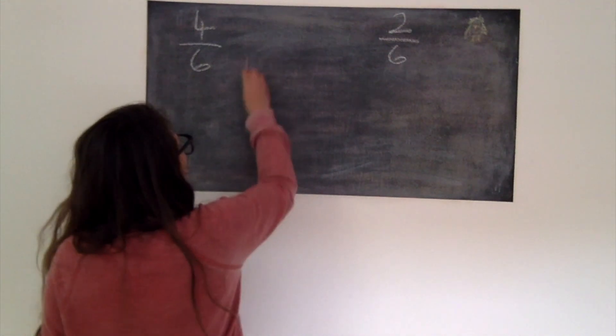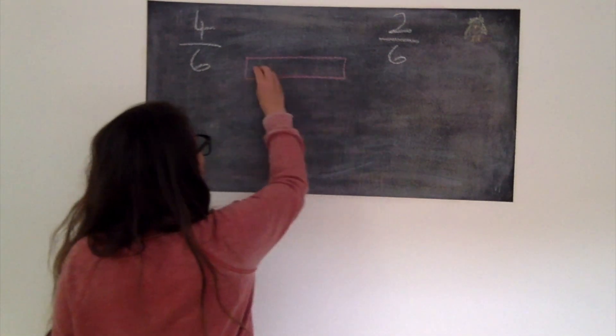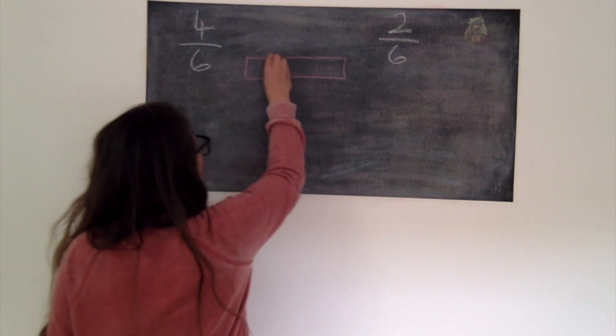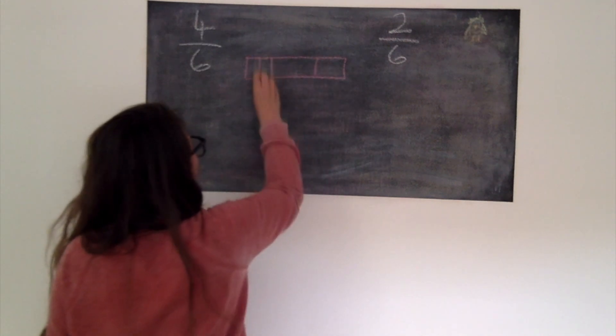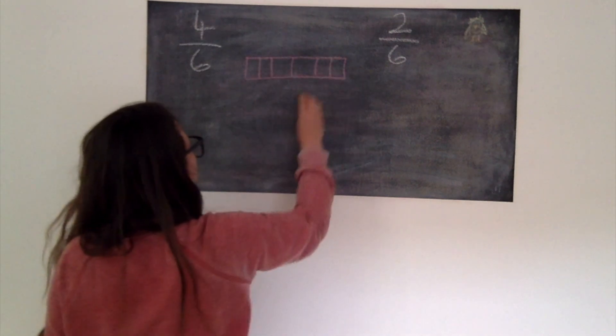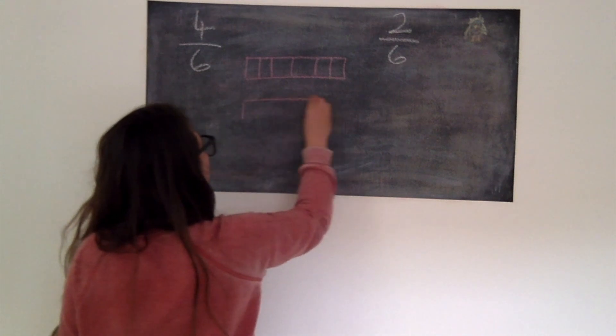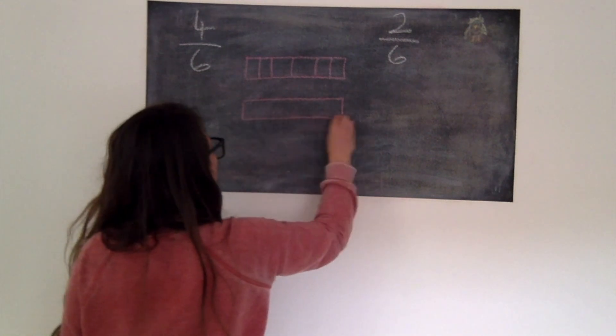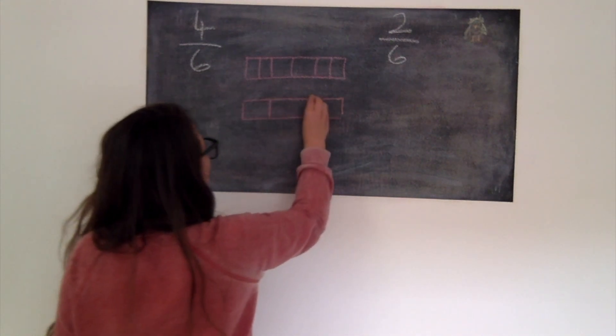Let's have a look. Hopefully you started off by drawing 2 bar models that are the same size. You then needed to split them into 6 because that is our denominator for both of them. As you can see I started off by splitting them into thirds first and then splitting each of those into 2.